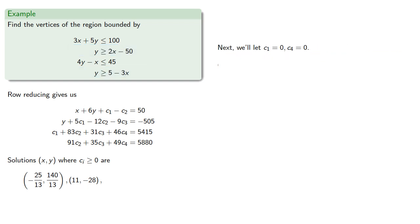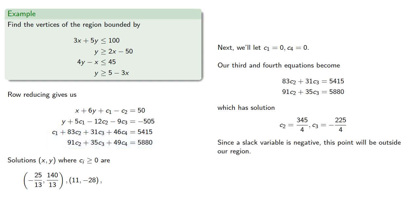Next, we'll let c1 and c4 be 0. Our third and fourth equations become... Which has solution... But since the slack variable is negative, this point will be outside the region. So, c1 and c4 are 0, so it would still be a point at the intersection of the first and fourth boundary curve. But since c3 is negative, the third inequality won't be satisfied.